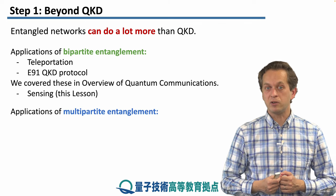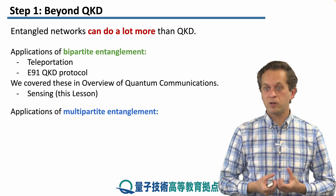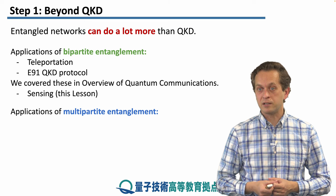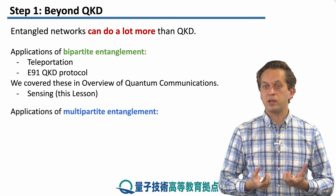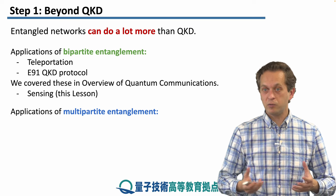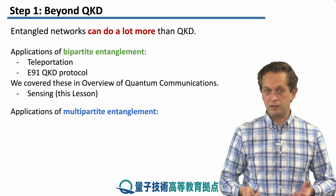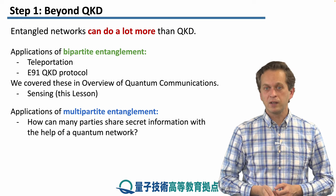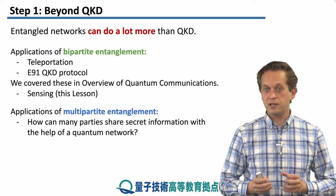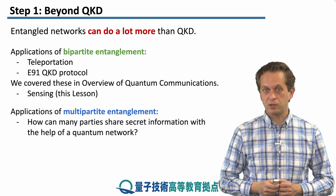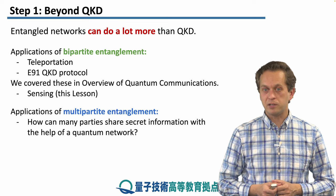We will also move beyond bipartite entanglement and consider multipartite entanglement. We know that multipartite entangled states exist, and we've already learned a lot about them. So what are different ways we can make use of multipartite entanglement? Networks are capable of distributing not only bipartite entanglement but also multipartite entanglement. Here, we're going to look at how many parties can share secret information with the help of a quantum network — a multipartite generalization of the usual QKD setting.